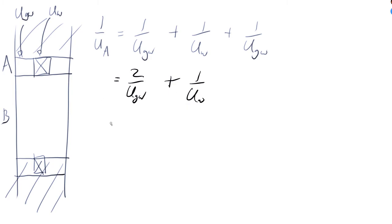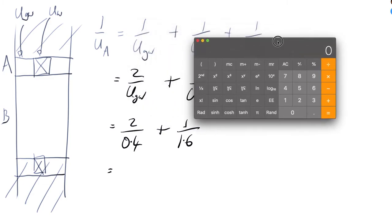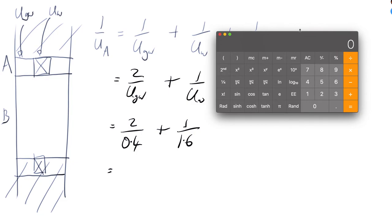Which is 2 over 0.4 for glass wool, plus 1 over 1.6 for the wood, which is, and let's just get, let's use a calculator to work this out. Because first of all, it's probably quicker.